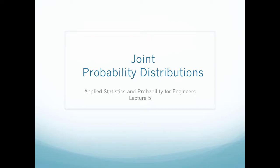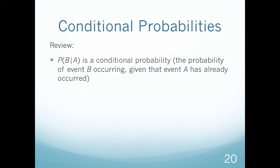Welcome to our next lecture on joint probability distributions. In this video, we're going to be focusing on conditional probabilities of joint distributions. As a brief review, a conditional probability is the probability of event B occurring given that A has already occurred.